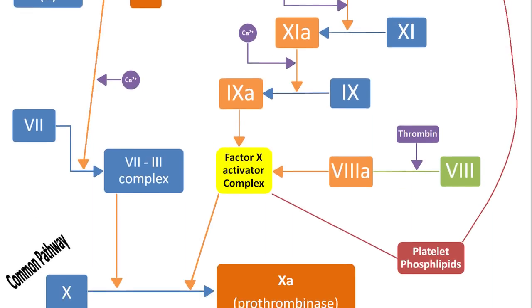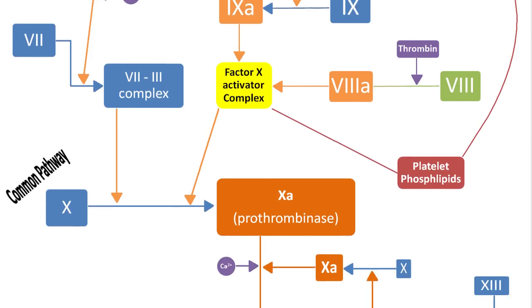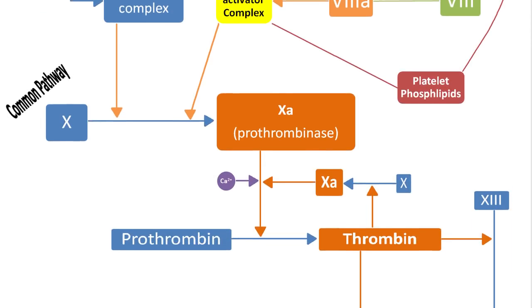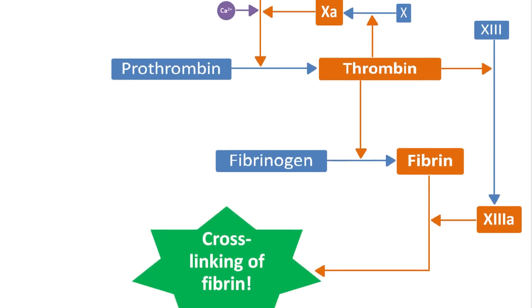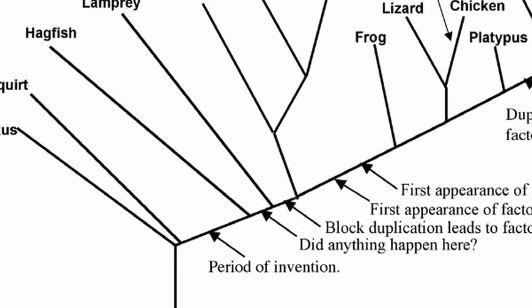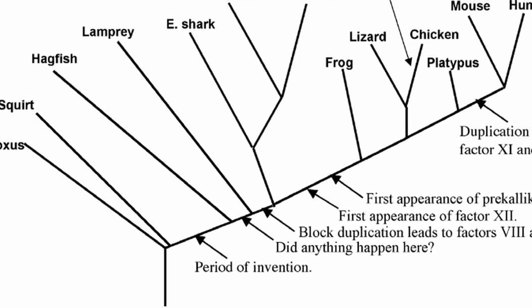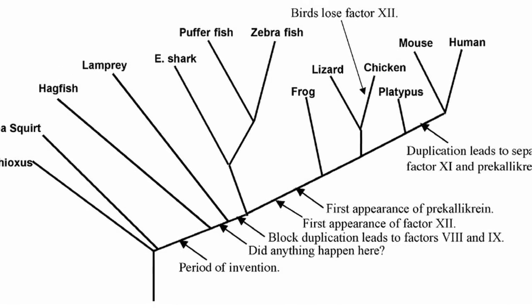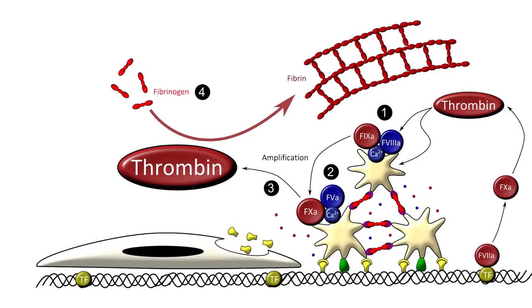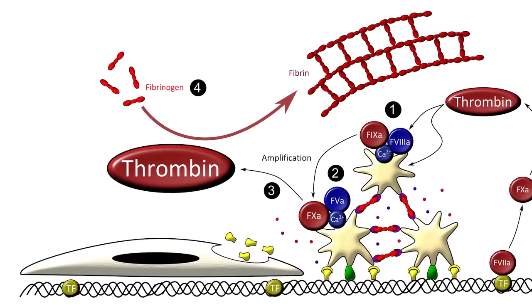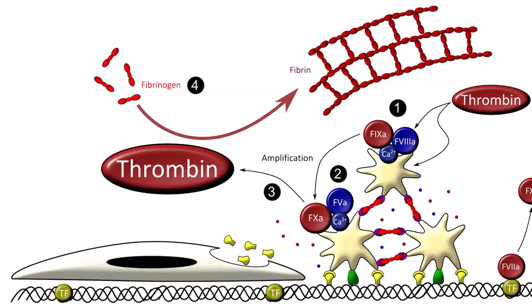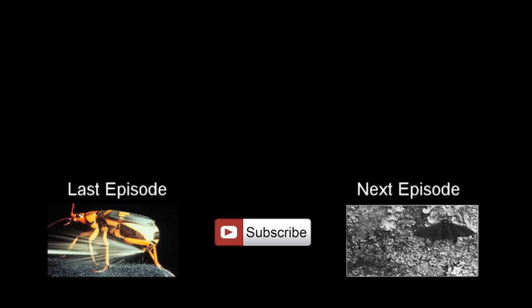By any definition of irreducible complexity, the clotting cascade simply does not fit the bill. It can in fact be reduced and still function, and each step along the way still serves the same function of amplifying the clotting process. More importantly, in living examples of the cascade there is a correlation to the step-by-step development of the system that corresponds directly to the genetic and phylogenetic family tree. Rather than falsifying the theory, the clotting cascade is a fulfillment of many predictions made by the theory of common descent — and another example of how creationism taught me real science.